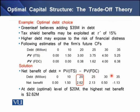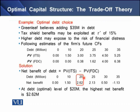For all levels of debt, we compute the net benefit and find that at a debt level of 20 million dollars, the net benefit is highest at 2.62 million. This is therefore the optimal debt choice for the firm, since at this level the firm achieves the highest net benefit. So in this particular case, the optimal debt choice for the firm is to use 20 million dollars as debt in its capital structure.